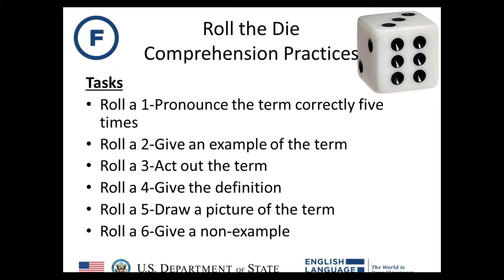I rolled a four, so I have to give the definition of 'energetic.' The definition of energetic is to have a lot of energy, an abundance of energy, and to do many actions. Now Rob is going to roll. He rolled a six, so he has to give a non-example of 'energetic.' A non-example would be something like the opposite or an antonym — for example, my brother is very lazy; he just sits around all day on the couch and does not exercise.